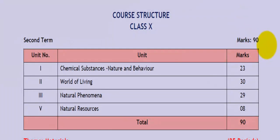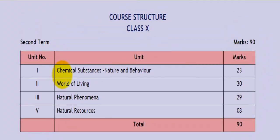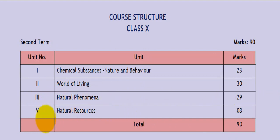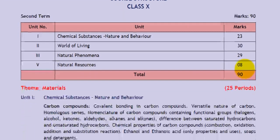This is available on the website of the CBSE. Unit 1, Chemical Substances, Nature and Behavior will be for 23 marks. Unit 2, World of Living will be for 30 marks. Unit 3, Natural Phenomena will be for 29 marks. And Unit 5, Natural Resources will carry 8 marks.